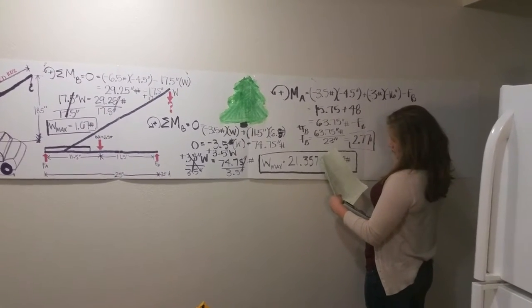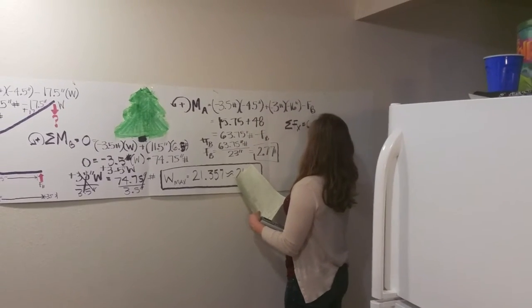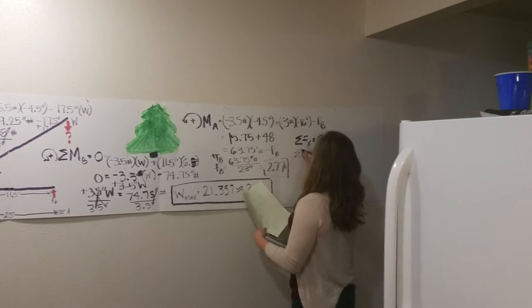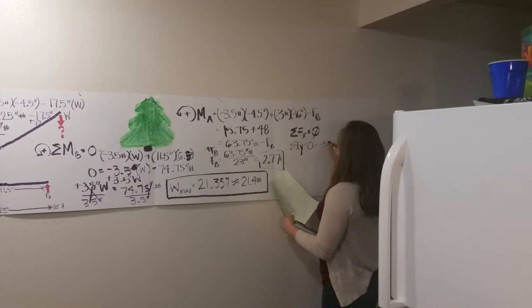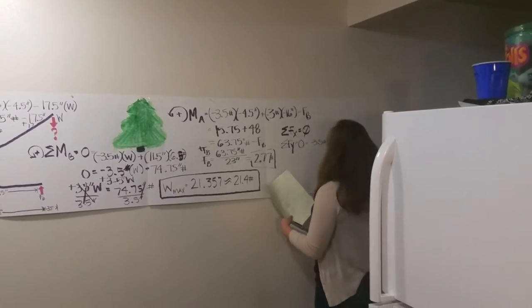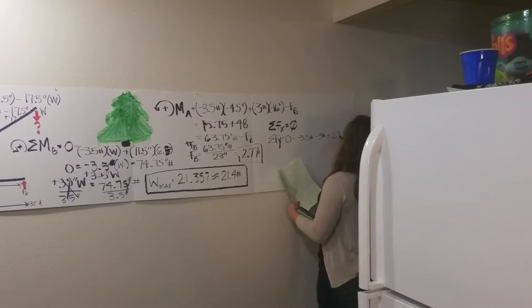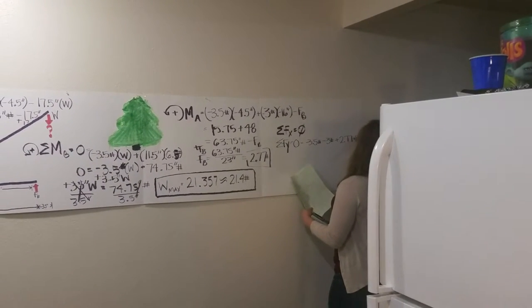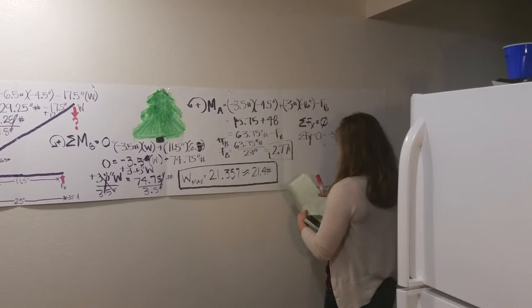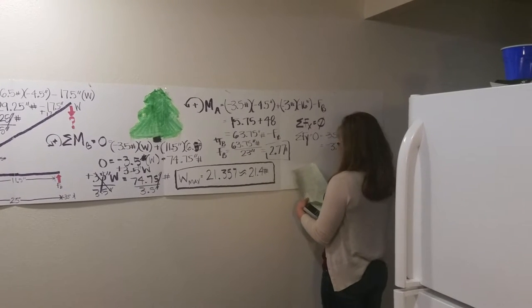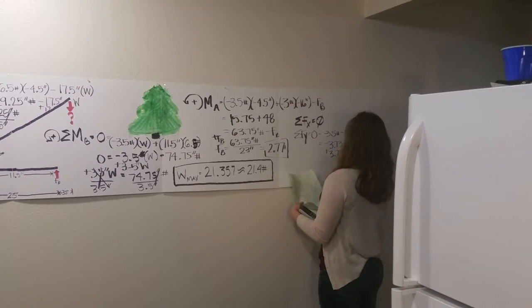And so then since there has to be an equilibrium, the sum of the forces in the X is zero with an unloaded crane. And so then the sum of the forces in the Y are equal to zero. And if you have negative 3.5 pounds, minus 3 pounds plus 2.77 for FB, and then you're also going to have FA to figure out.